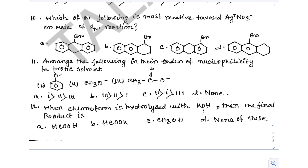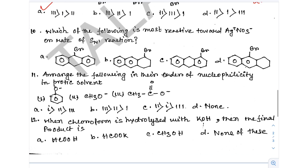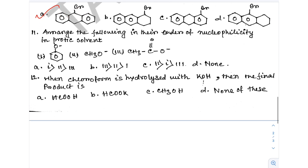Next, question 10: Which of the following is most reactive towards AgNO₃ via SN1 reaction? SN1 reactivity depends on which carbocation is most stable. The carbocation here is 2-degree benzylic — stabilized by the benzene ring — making it the most stable carbocation. Therefore this compound undergoes SN1 fastest.